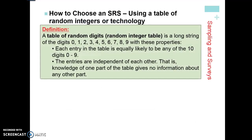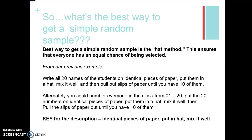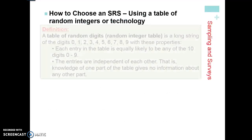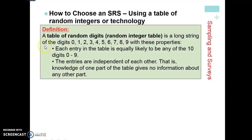There's another way to do simple random samples, and that is through technology. You'll have a table of random digits or random integer table — it's just a long string of numbers from zero to nine. Basically, each entry in the table is equally likely to be any of the numbers from zero to nine, and each entry is independent of each other.